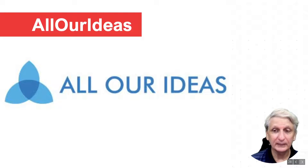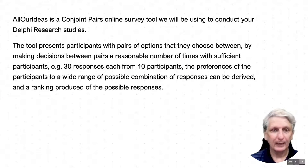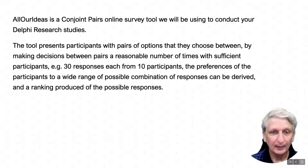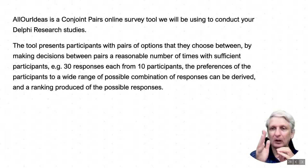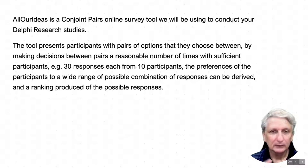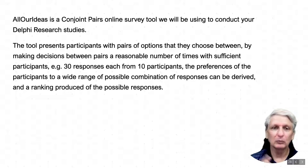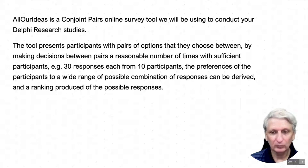We're going to use a tool called All Our Ideas, which is a web-based tool for doing co-joint analysis. For your assignment, you're going to identify 10 participants and invite them to use the website. I suggest they make 30 responses — that is, 30 choices between pairs. We'll go through more about the assessment task in the tutorials, including how to structure your All Our Ideas survey, and we'll also do a practice run to take you through the processes.